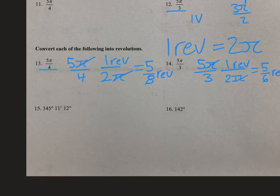Next up we have number 15 with 345 degrees, 11 arc minutes, and 12 arc seconds. We want to convert that to degrees, so we have 1 degree for every 60 arc minutes. Then we add 12 arc seconds, and we have 1 degree for every 3,600 arc seconds.